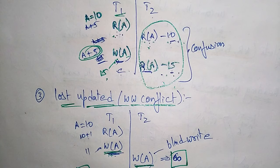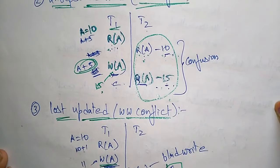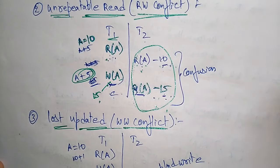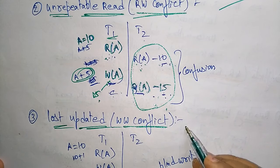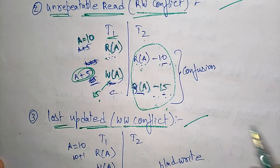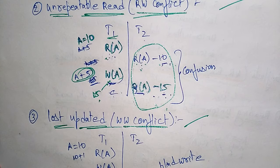These are the three concurrency control conflicts that arise during serializability of transactions. The first is reading uncommitted data, called a dirty read. The second is unrepeatable read. The third is lost update, a write-write conflict. Thank you.